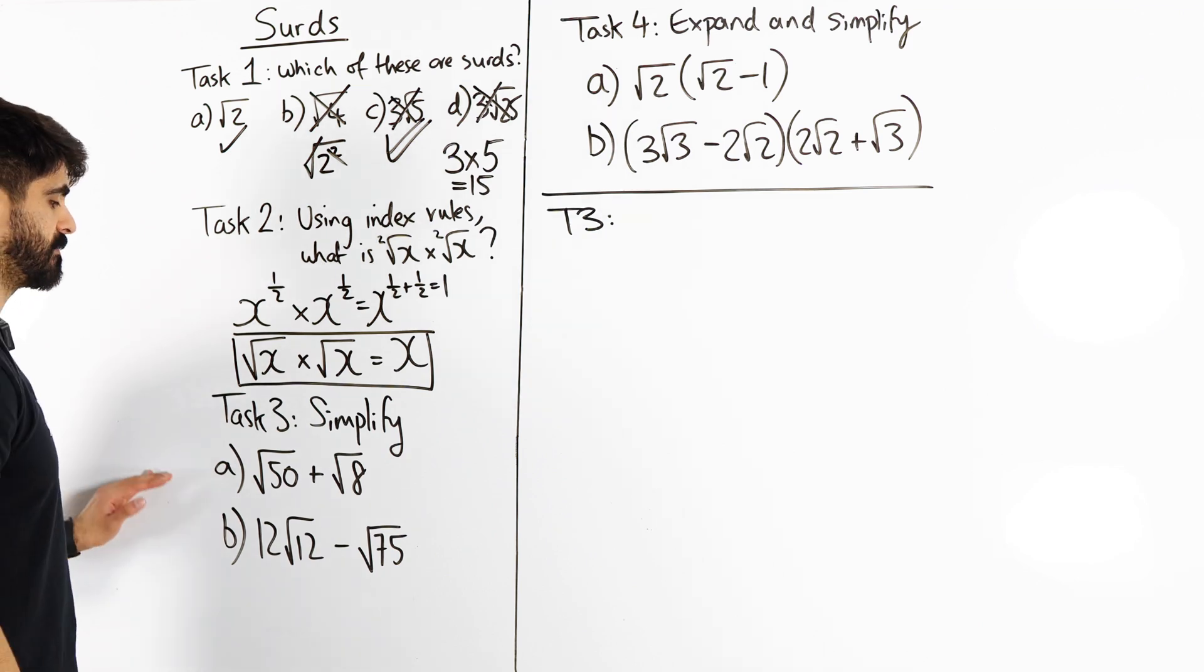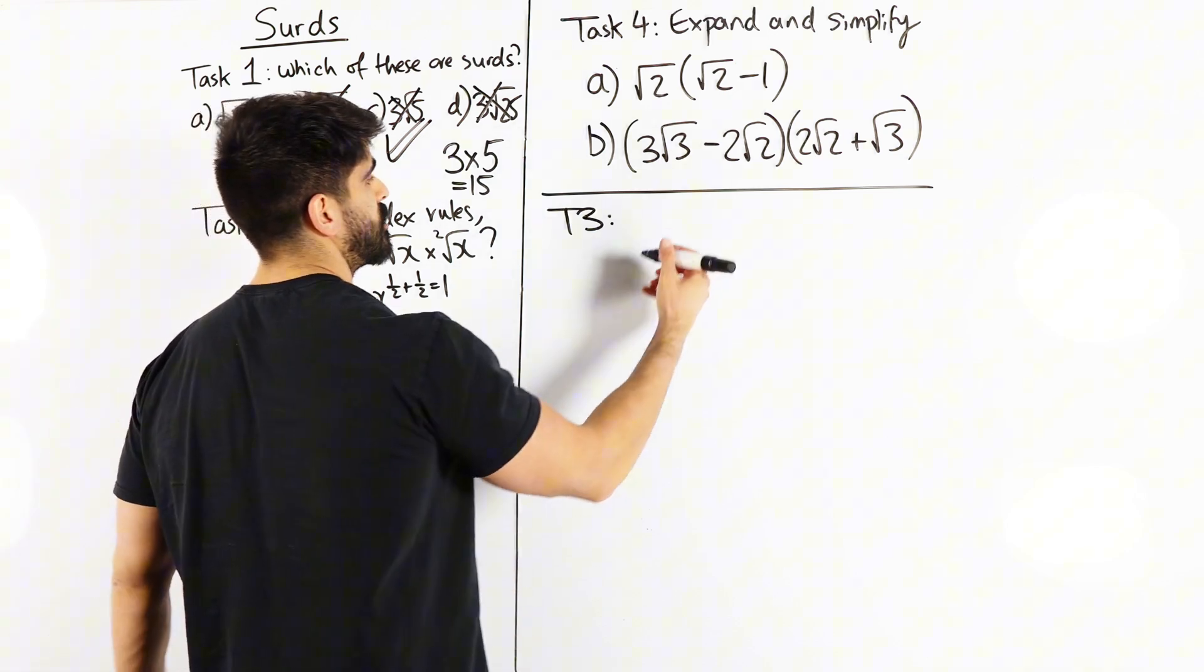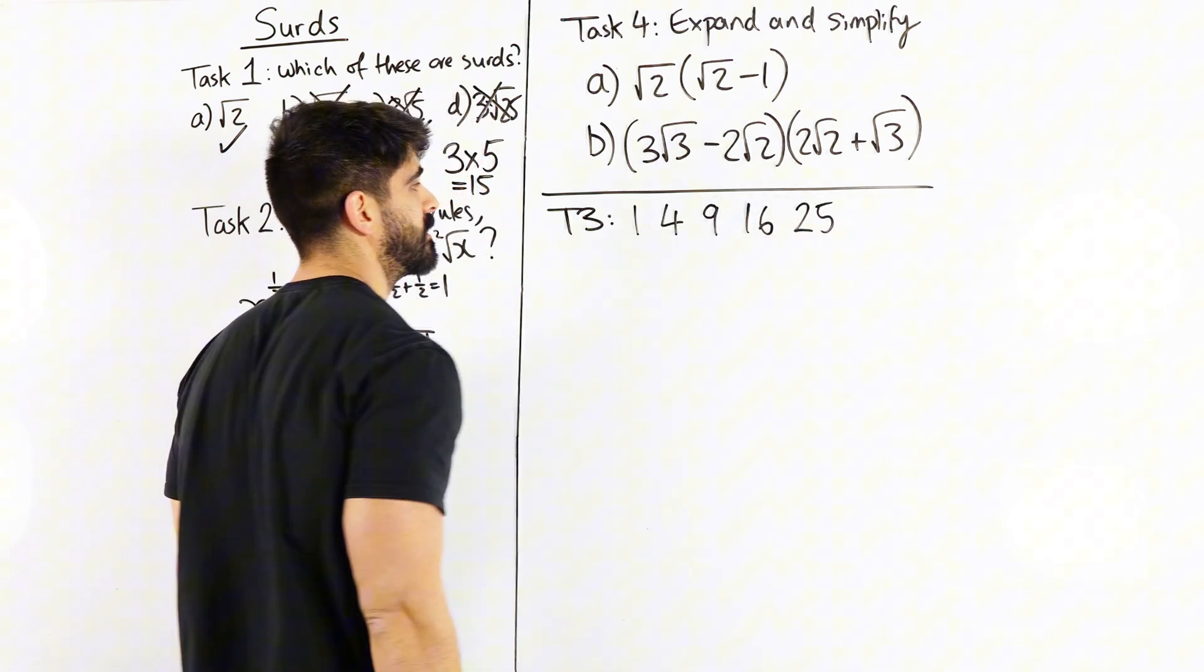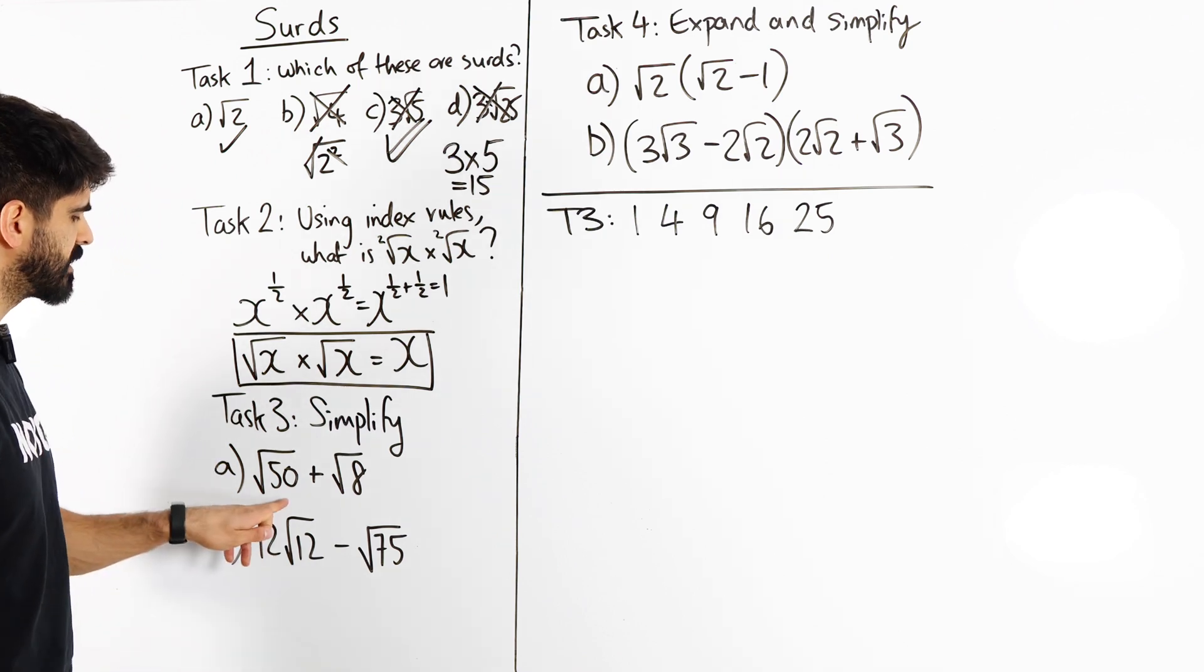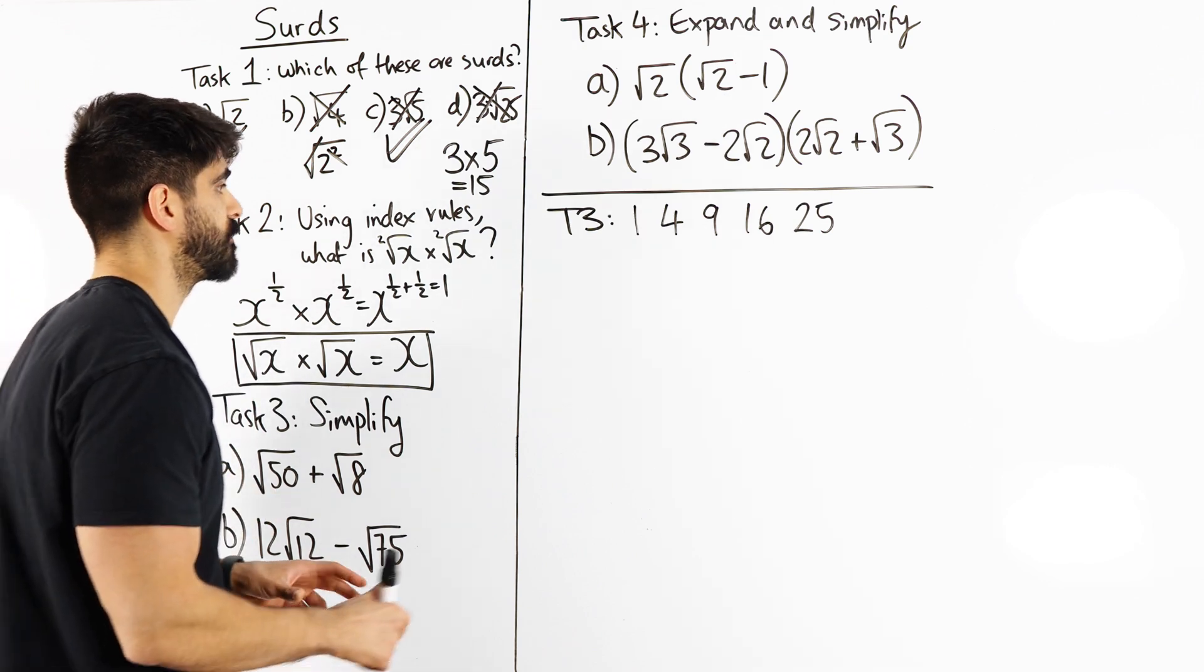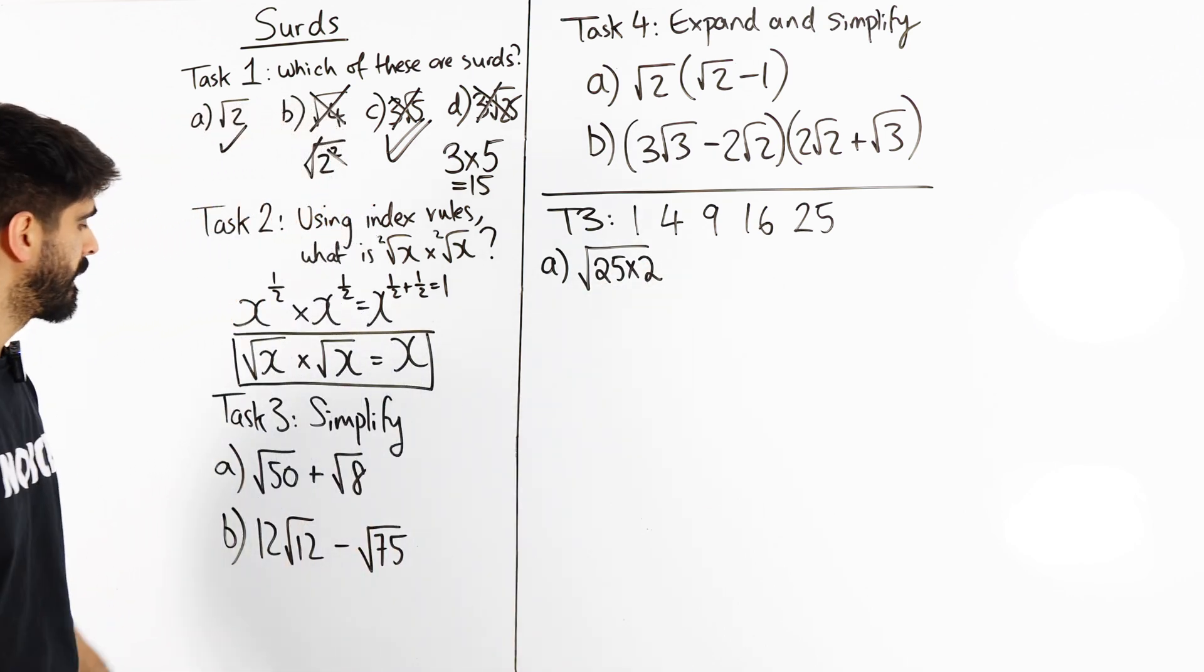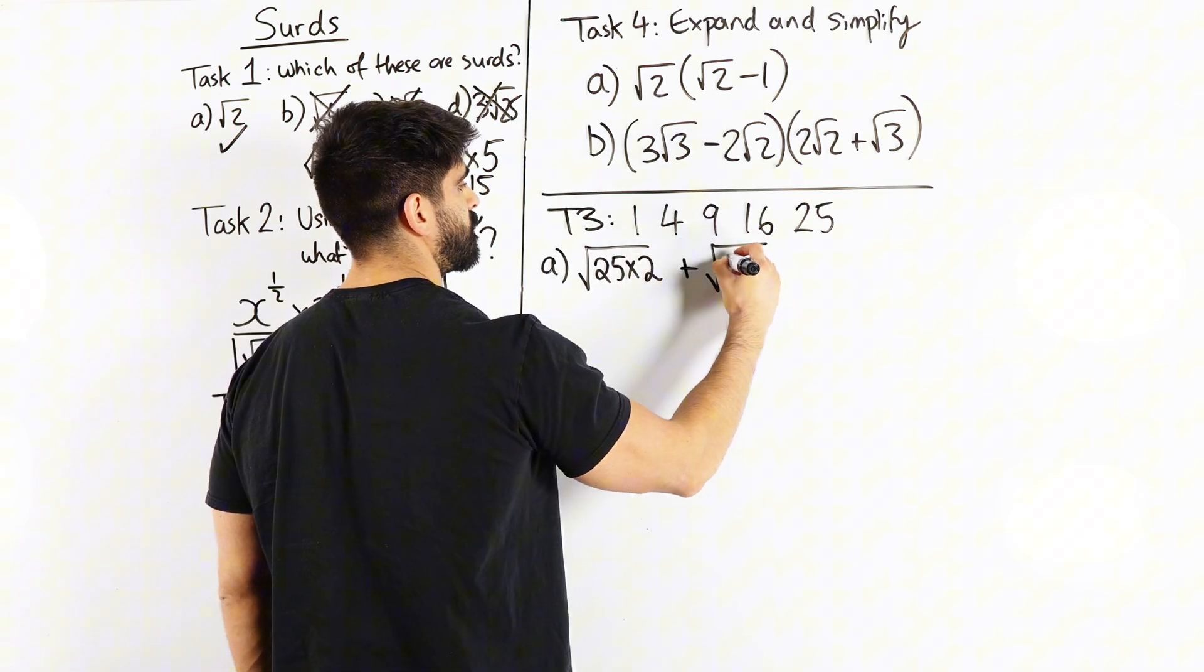Now in the non-calculator paper, when you simplify these surds, what I recommend you do is write down square numbers. So what are the square numbers? 1 squared, 2 squared, 3 squared, 4 squared, 5 squared and you can keep going. It just depends how much you want. To simplify a surd means to recognize that actually there are square numbers that go into these numbers. For example, root of 50. 50 can be rewritten as 25 times 2. And 8 can be written as 4 times 2.